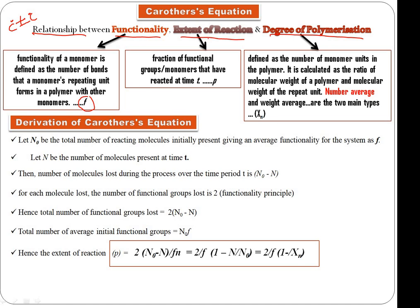Second point is extent of reaction. Extent of reaction is defined as the fraction of functional groups that have reacted at time t. In the polymerization reaction of monomers, after time period t, how many molecules have reacted - that number divided by the total number of molecules.